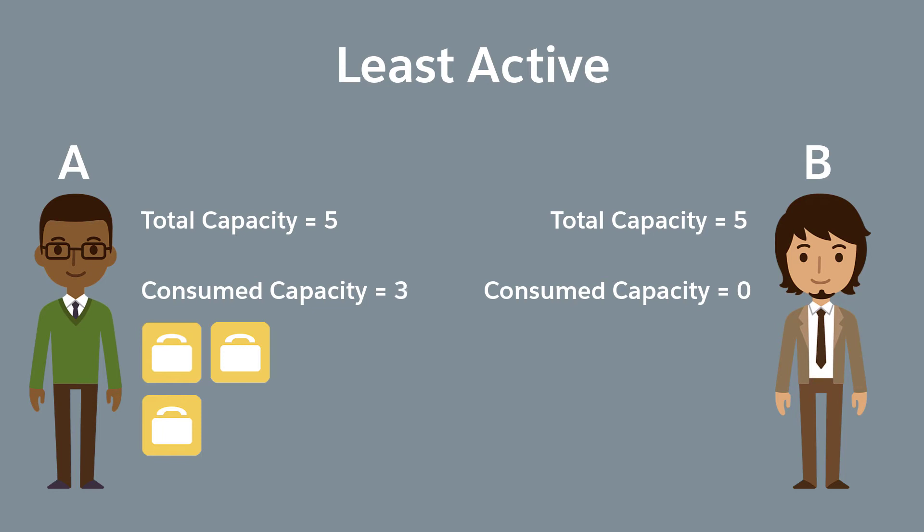Agent B has one active work item with a capacity impact of four, so a total of four. Because Agent A has a lower capacity impact than Agent B, incoming work items are routed to Agent A.